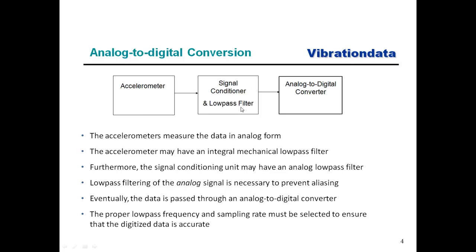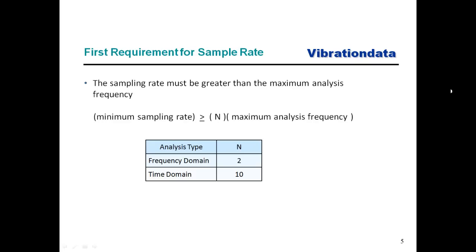We're going to set up two requirements for selecting the sample rate. The higher the sample rate, the better off we're going to be for collecting data. But we don't want to end up with terabytes of data from an excessively high sample rate — there's got to be some reasonable moderation. It's best to have a sample rate as high as is reasonably possible.